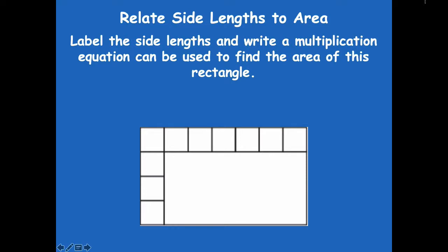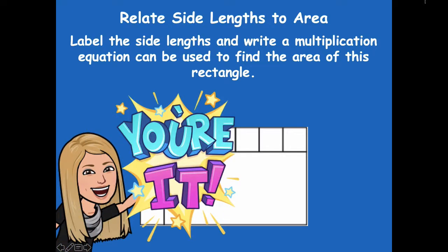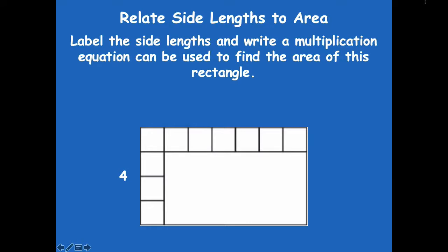We're going to label the side lengths and write a multiplication equation to find the area of this rectangle. Go ahead and pause the video, do that, and then click play when you're ready to go over it together. All right — so my sides are four by seven. Four times seven equals 28. The area of this is 28 square units, because they didn't tell us what the actual unit of measure was.